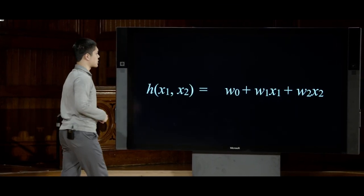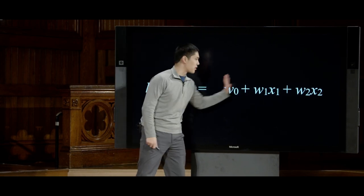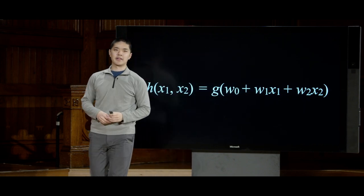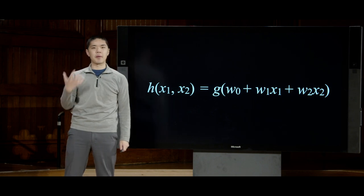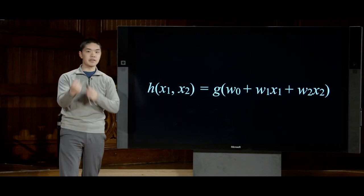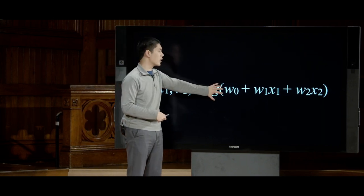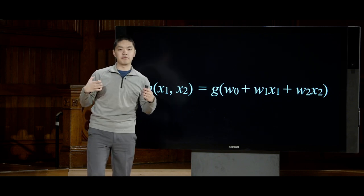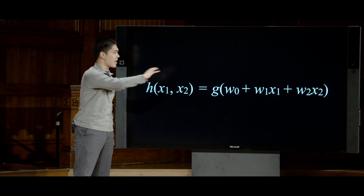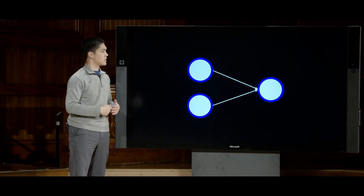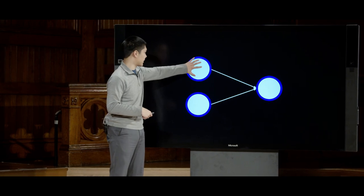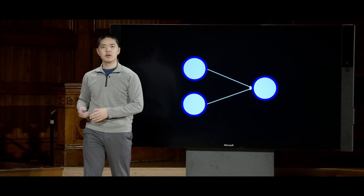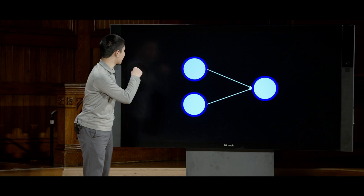Each activation function can be thought of as a function g applied to the result of all the weighted computation. We take a function g and apply it to weight0 plus the weighted sum of inputs — this is the model for the simplest neural network. We represent this graphically: a network with two inputs x1 and x2 and one output, classifying whether or not it's going to rain, for example.